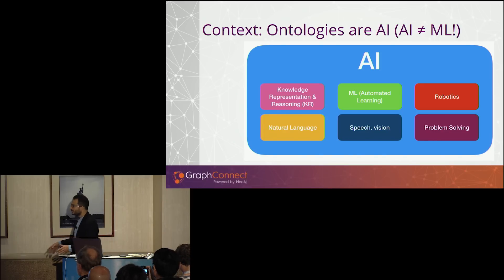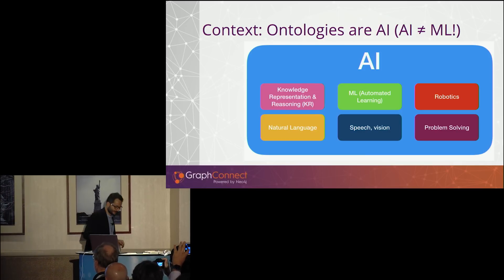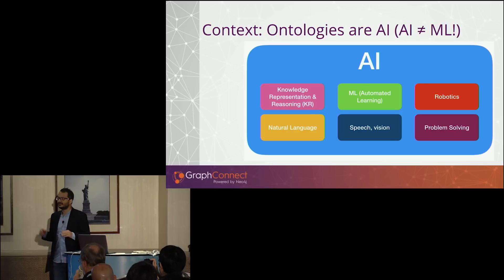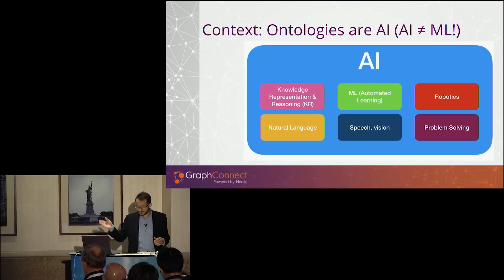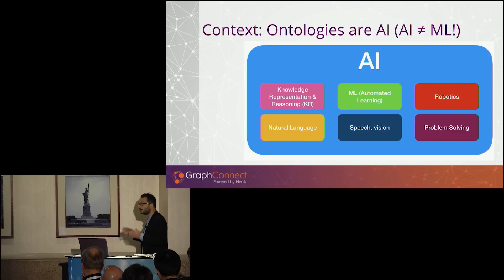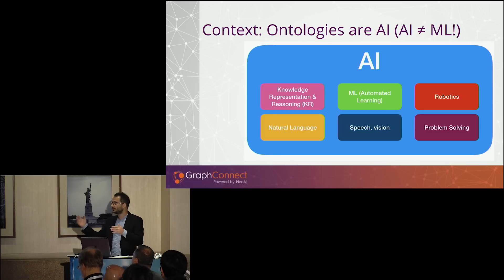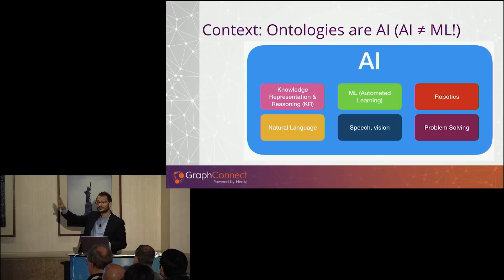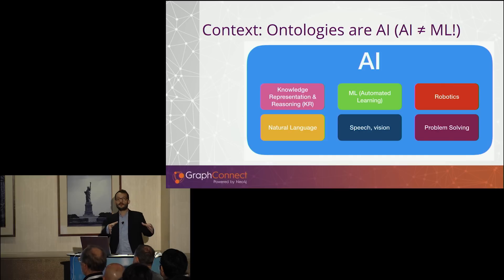We're in AI, which is the topic of the year. But lately, AI tends to be seen as a synonym of machine learning and it's not the case. There are many disciplines that fall under AI: robotics, natural language understanding and generation, speech, vision, automated learning, machine learning. But there's also knowledge representation and reasoning, which is the area I'm going to be talking about. It's at the other end of the spectrum from machine learning.